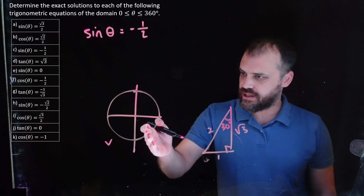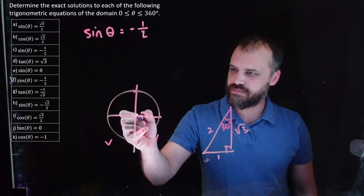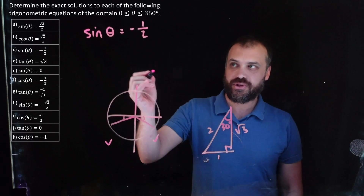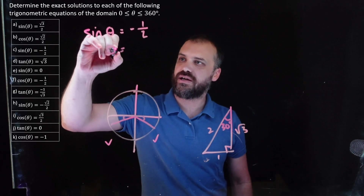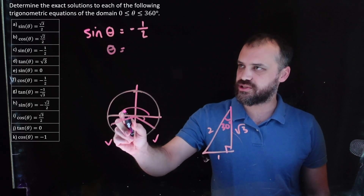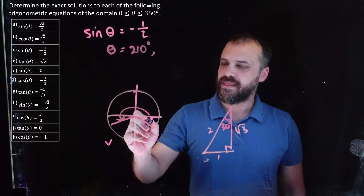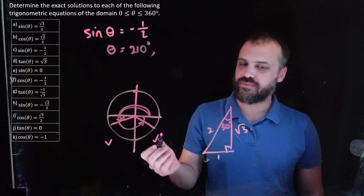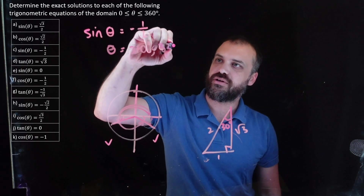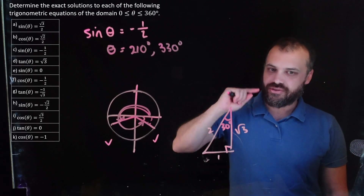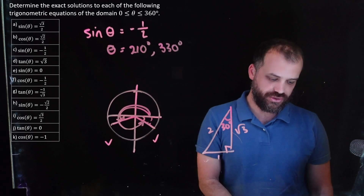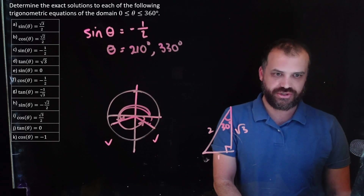Theta equals 180 plus 30 which is 210 degrees, or 360 minus 30 which is 330 degrees. These are the two answers. This is the working out you're going to show. Next question — but not before I celebrate.